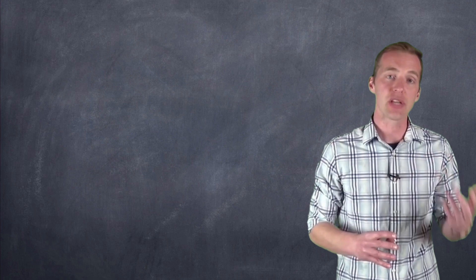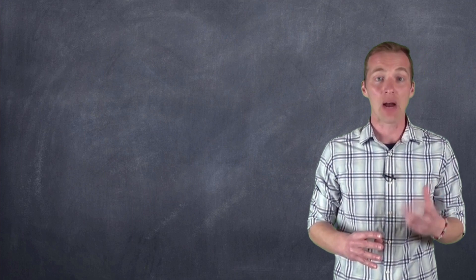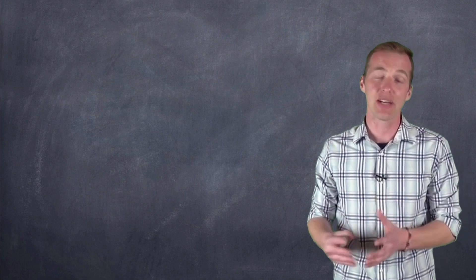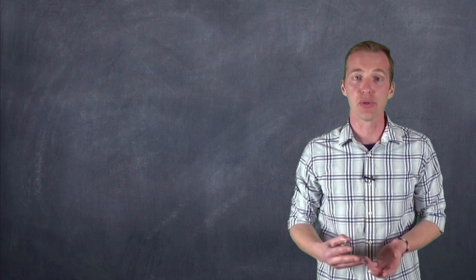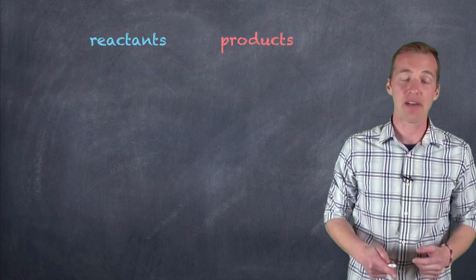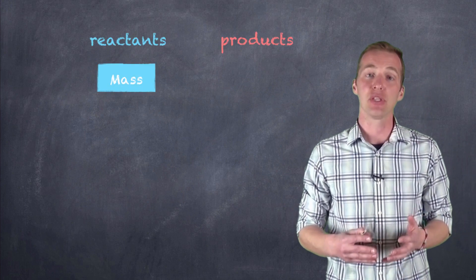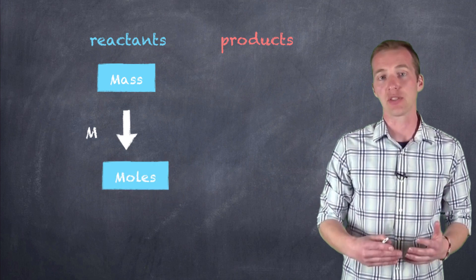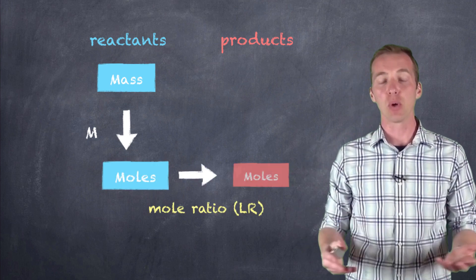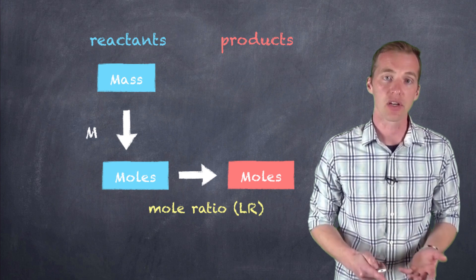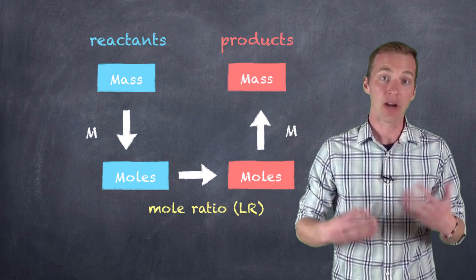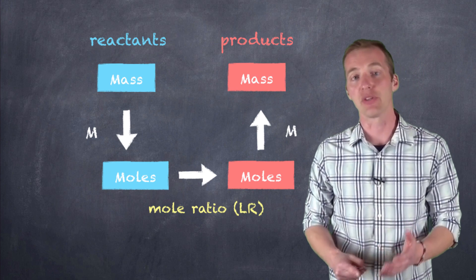The limiting reagent and excess reagent really just add one more layer to our stoichiometric problems. Rather than just having one reactant, we now likely have two or more reactants, and we have to figure out which one is going to dictate how much product is produced. We have our reactants, and typically we'll have the mass of a reactant, which we use the molar mass to convert into moles. We then use our mole ratio to establish the number of moles of product that are going to be produced, and then, using the molar mass again, we figure out the mass of product we should expect.